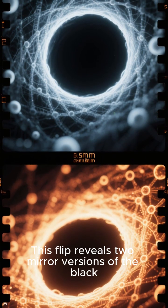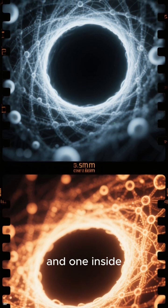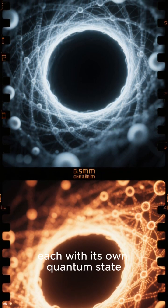This flip reveals two mirror versions of the black hole, one outside and one inside, each with its own quantum state called a thermofield double.